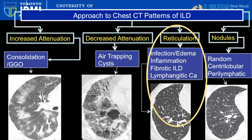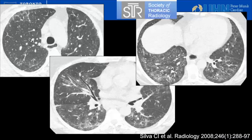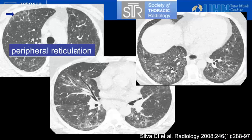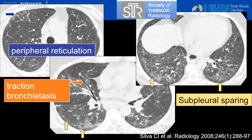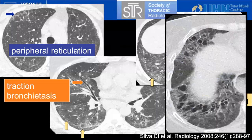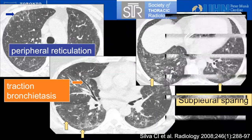Let's move on to reticulation. This is a case of peripheral reticulation with subpleural sparing, where the immediate periphery of the lungs does not appear as severely involved. Notice some traction bronchiectasis, which is a clue that a fibrotic process is at play. This is a more severe example showing ground glass density and reticulation associated with more severe traction bronchiectasis in the right middle and lower lung zones.